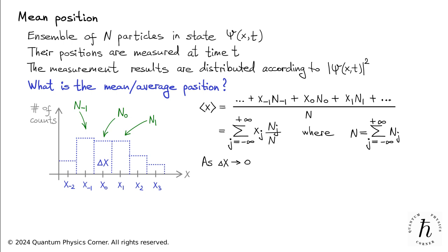Now, as delta x approaches zero and the position detector becomes more precise, and assuming an infinitely large ensemble N, the frequency n sub j over N tends to the probability of finding the particle in the delta x interval around x sub j. This probability, according to the Born rule, is the square of the modulus of psi multiplied by delta x.